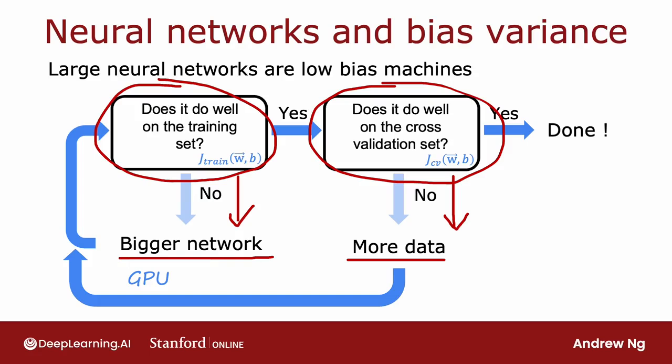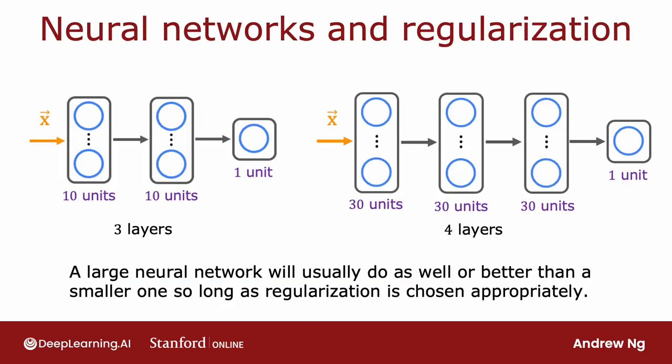When you're training a neural network, one thing that people have asked me before is, whether my neural network is too big, will that create a high variance problem? It turns out that a large neural network with well-chosen regularization will usually do as well or better than a smaller one.